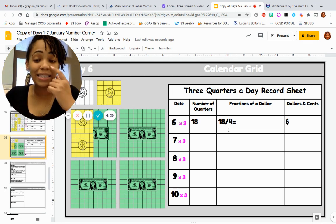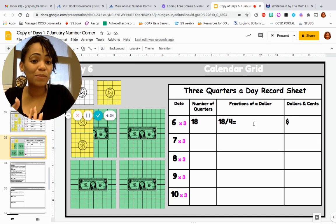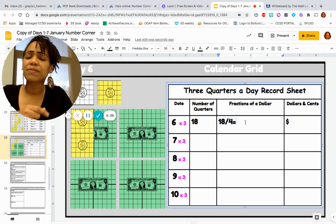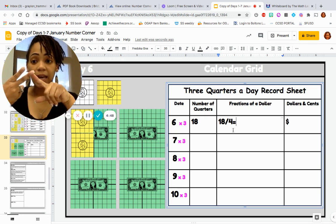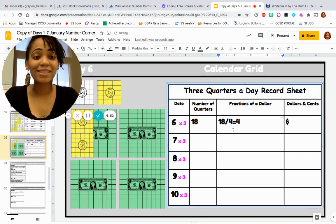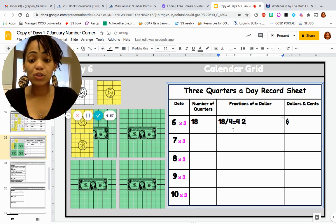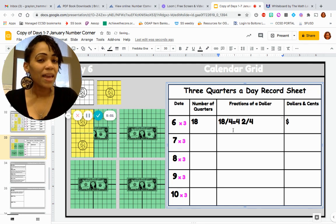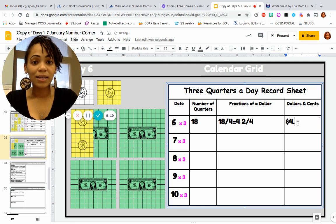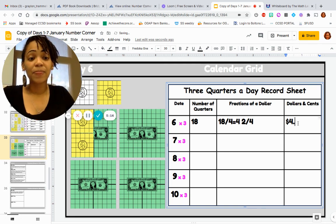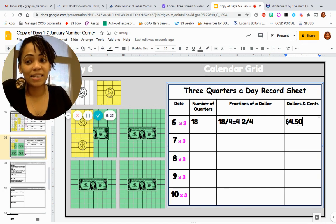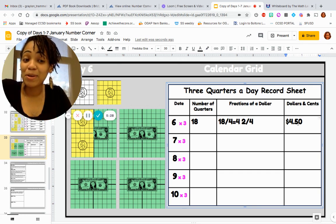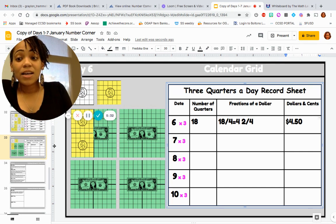So here's our fraction of a dollar, 18 fourths. I want you to think really quickly, how can we figure out how much money that is? Before we think about how much money that is though, let's simplify this fraction. 18 fourths is like saying 18 divided by 4. So let's count by 4s: 4, 8, 12. We know 4 times 4 is 16. So that means I'd have 4, and then I'd have 2 quarters left over. That may help us figure out how much money we have. 4 and 2 fourths, which is 4 and a half, means I have $4 and then 2 quarters out of the next dollar, or half of a dollar, which is how much money? 50 cents. So far we have $4.50.